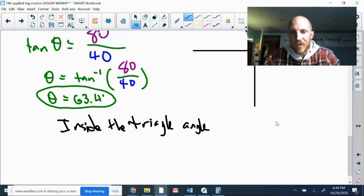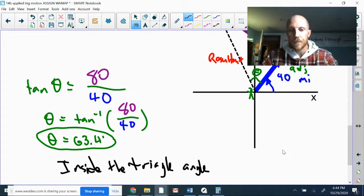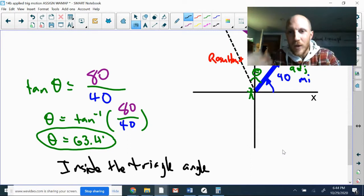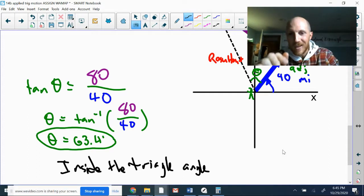Inside the triangle angle, 63.4 degrees. Okay, to get the direction angle I know I need to start from the positive side of the x-axis. The inside the triangle angle is not measured from the positive side of the x-axis. That 63.4 degrees is actually measured from the blue vector.